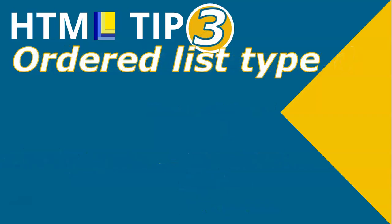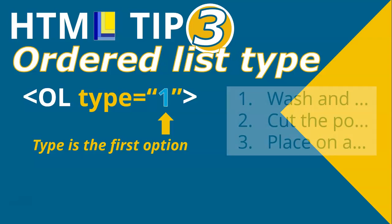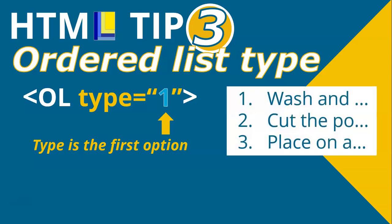HTML tip number three: an ordered list. Whenever you use an ordered list, the type is the first option in the list. For example, if you want numbers like one, two, three, the type will be the number one. If you wanted ABC in capitals, your type will be a capital A. If you wanted Roman numerals in small letters, your type will be the small letter I.